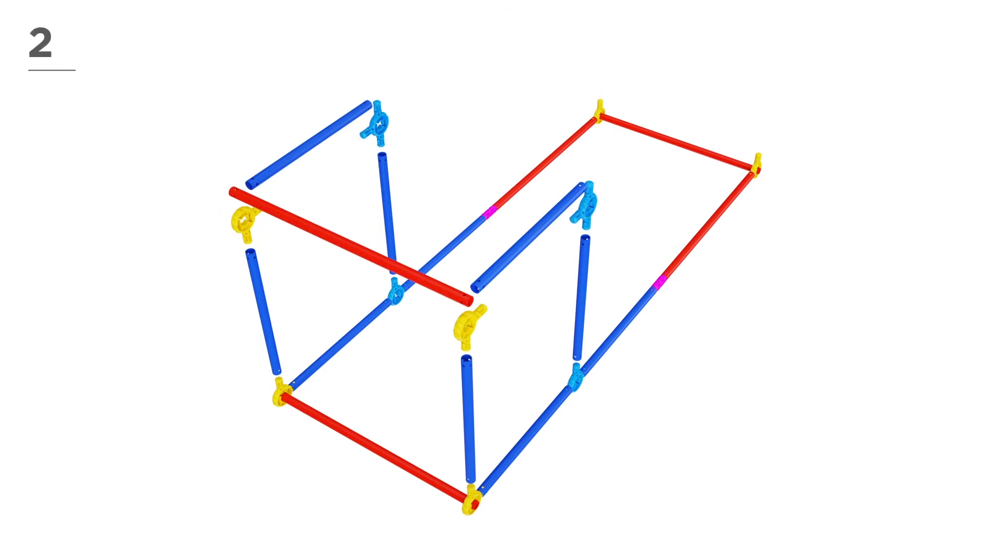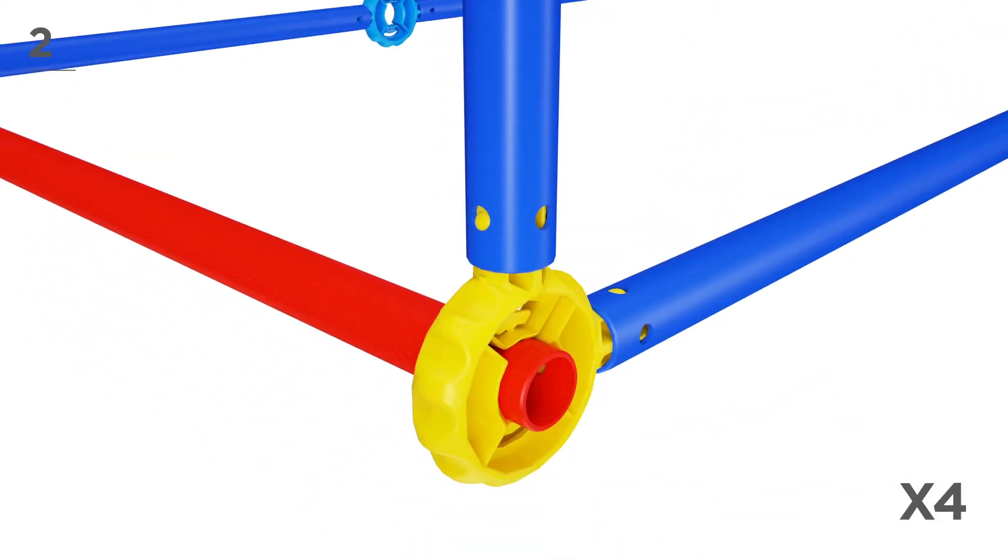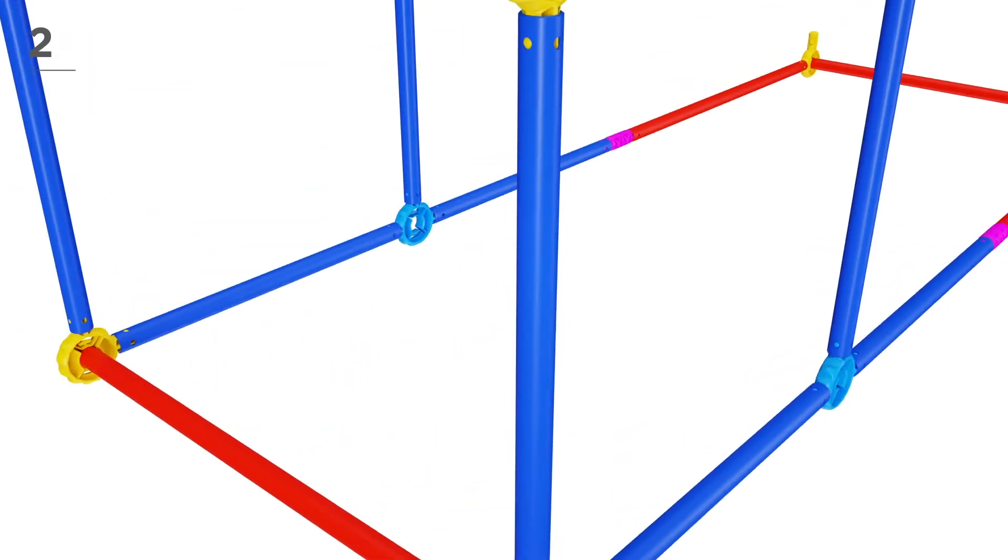Now, using 1 red pole, 6 navy poles, 2 yellow connectors, and 2 blue connectors, build the front as shown here.